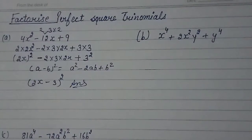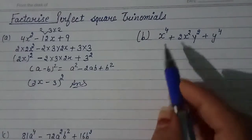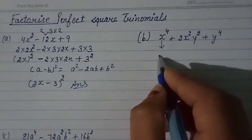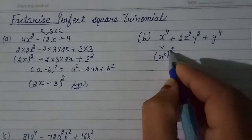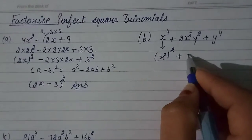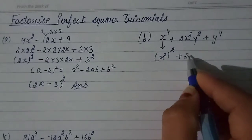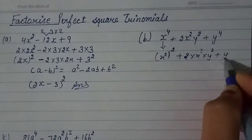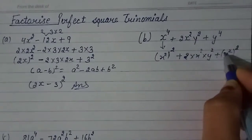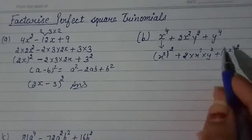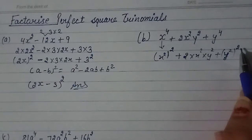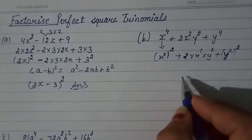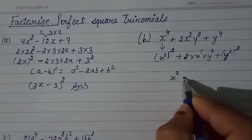Now for the second part: x squared plus 2x squared y squared plus y to the power 4. This can be written as x squared raised to the power 2, plus 2ab plus b squared, which means you can write it as x squared plus y squared whole squared.